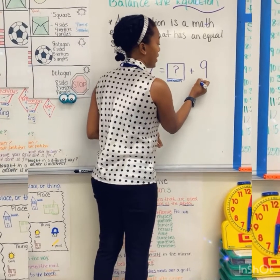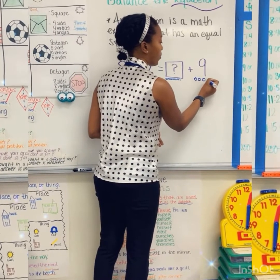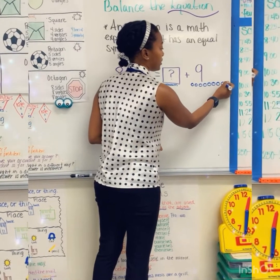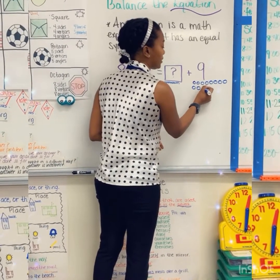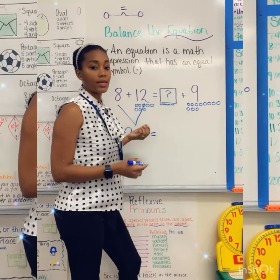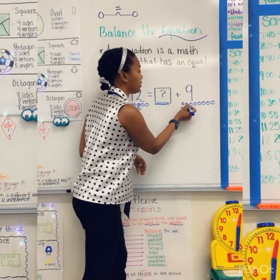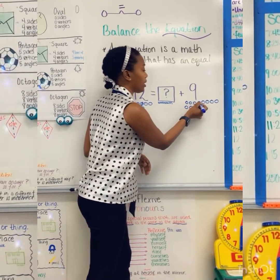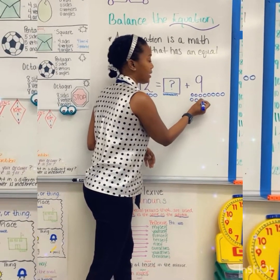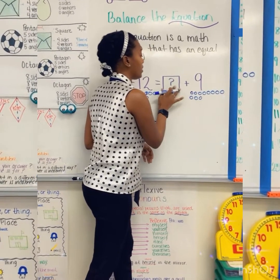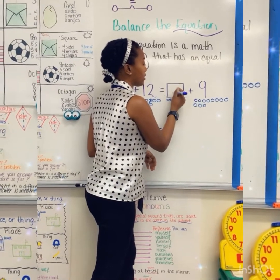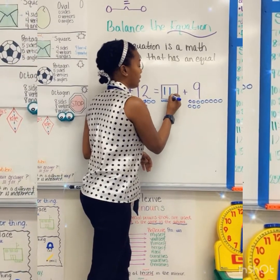So that is 10, 11, 12, 13, 14, 15, 16, 17, 18, 19, 20. Now I need to count how many counters I have: 1, 2, 3, 4, 5, 6, 7, 8, 9, 10, 11 — which makes this unknown number 11.